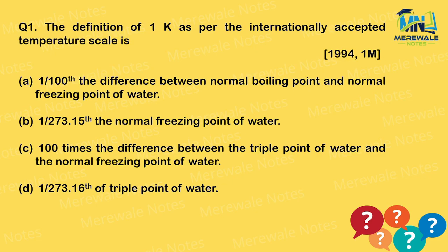We start with the first question, asked in 1994 as a 1-mark question in the GATE Mechanical paper. The question asks: what is the definition of one Kelvin as per the internationally accepted temperature scale?